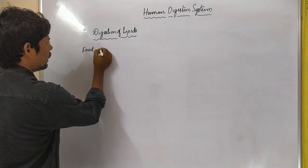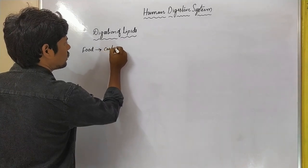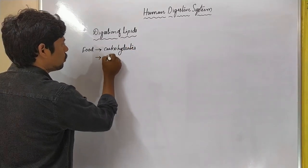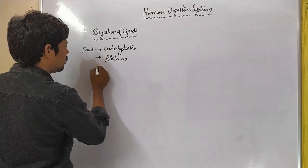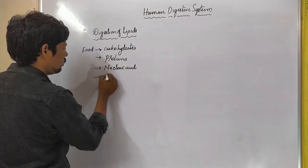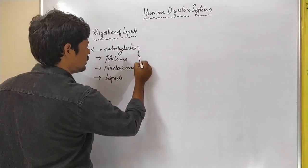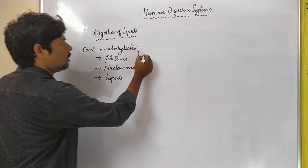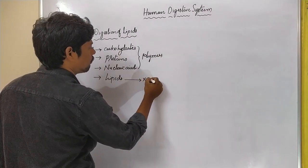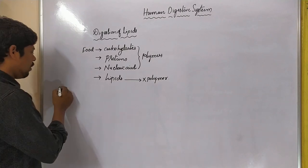We know the food we take contains many macromolecules, including carbohydrates, proteins, nucleic acids, and lipids. Among all these, carbohydrates, proteins, and nucleic acids are polymers, whereas lipids are not polymers.